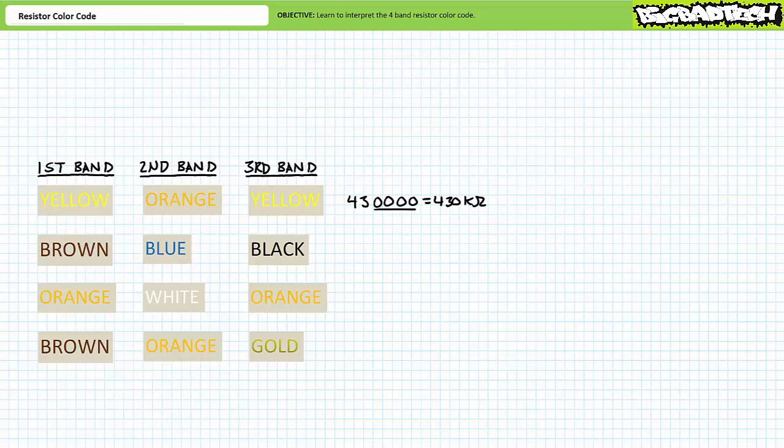Let's take a look at the first set. Yellow, orange, yellow means 4,3, followed by 4 zeros, or 430,000. Or more appropriately, 430 kilo-ohms. Brown, blue, black means 1,6, followed by 0 zeros, or 16 ohms. Orange, white, orange is 3,9, followed by 3 zeros, or 39,000. Or more appropriately, 39 kilo-ohms. Finally, brown, orange, gold is 1,3 times 0.1, or 1.3 ohms.